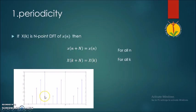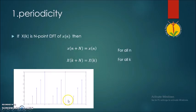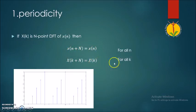Let us see what is meant by a periodic sequence. Here in this graph you will see that one sequence is given which is repeating the same pattern after a particular number of samples. A sequence which repeats the same pattern is called a periodic sequence. This property indicates that if a sequence is periodic, its DFT is also periodic for all values of k.